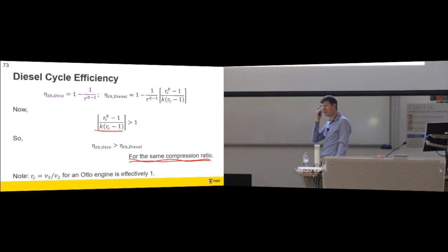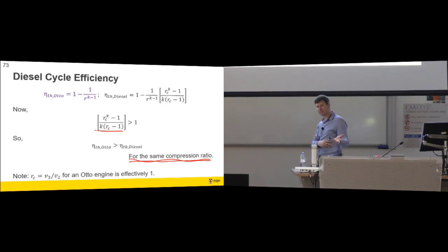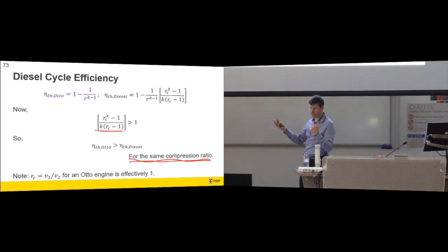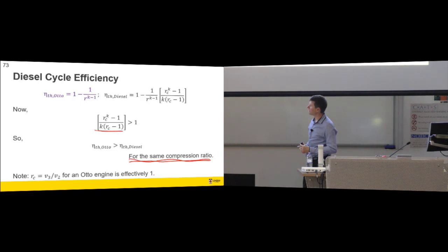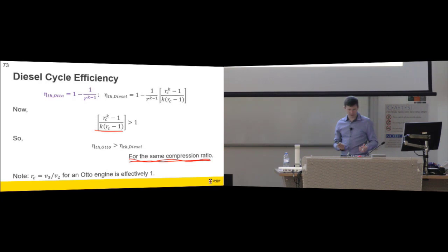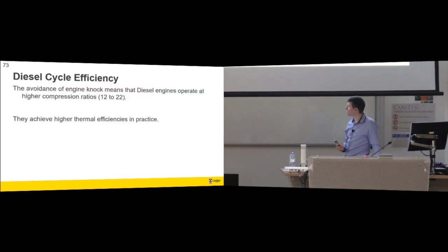Higher compression ratio, right? So for a given compression ratio, the diesel is less efficient than the auto, but getting around this auto ignition problem lets us, so we can take, the compression ratio of a car might be, so a petrol car might be eight, the compression ratio for a diesel engine might be 19. So we've significantly increased our compression ratio, and that means our overall thermal efficiency will be higher, even though our RC is not one. So that's where that comes from. Higher compression ratios, and they achieve higher thermal efficiencies in practice.